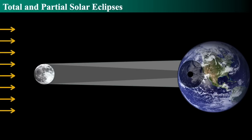A total and partial solar eclipse happens when the shadow of the moon lands on the Earth. The black spot is the only place where you'll see a total eclipse; the gray spot is where you'll see a partial eclipse. The dark gray triangle is called the umbra — the darkest spot in the moon's shadow where the sun is completely covered. If you're in the larger gray triangle, you're in the penumbra, which is wider, and the sun is only partially covered.